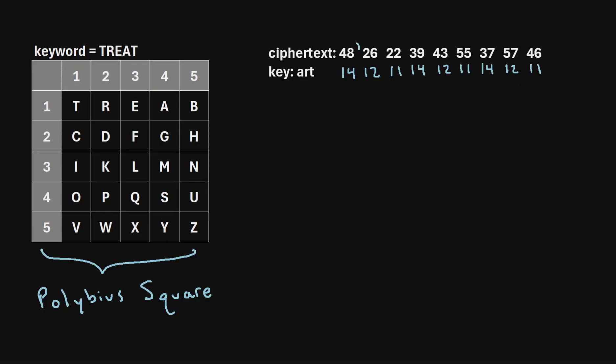Next we need to just take the ciphertext and subtract the value from the keystream. So 48 minus 14, so that's 34. Then 26 minus 12, that's 14. Then 22 minus 11 is 11. And so on. So here's what that looks like.